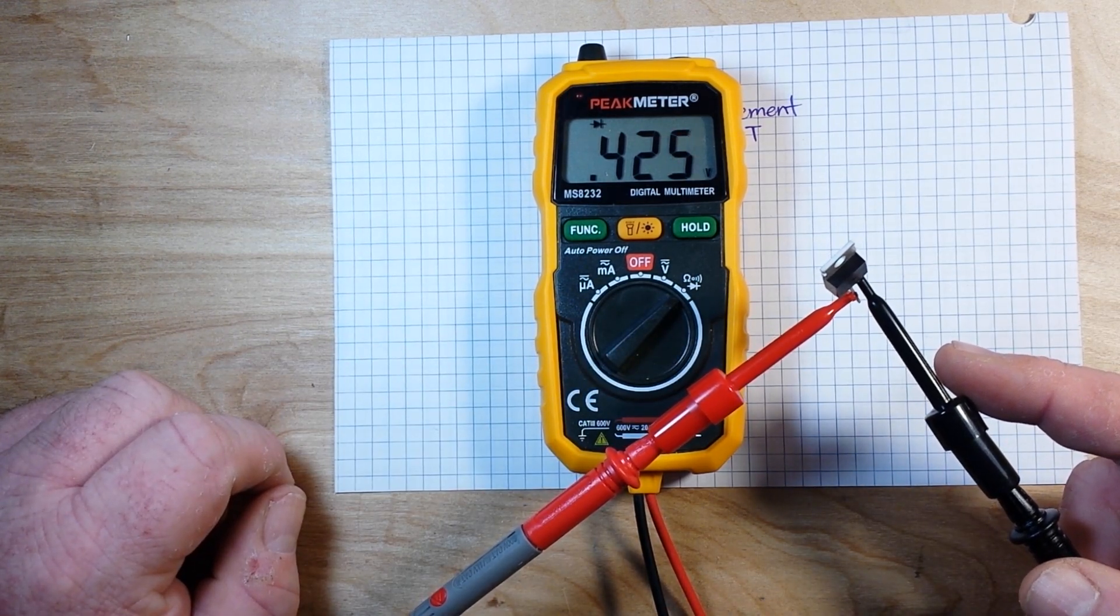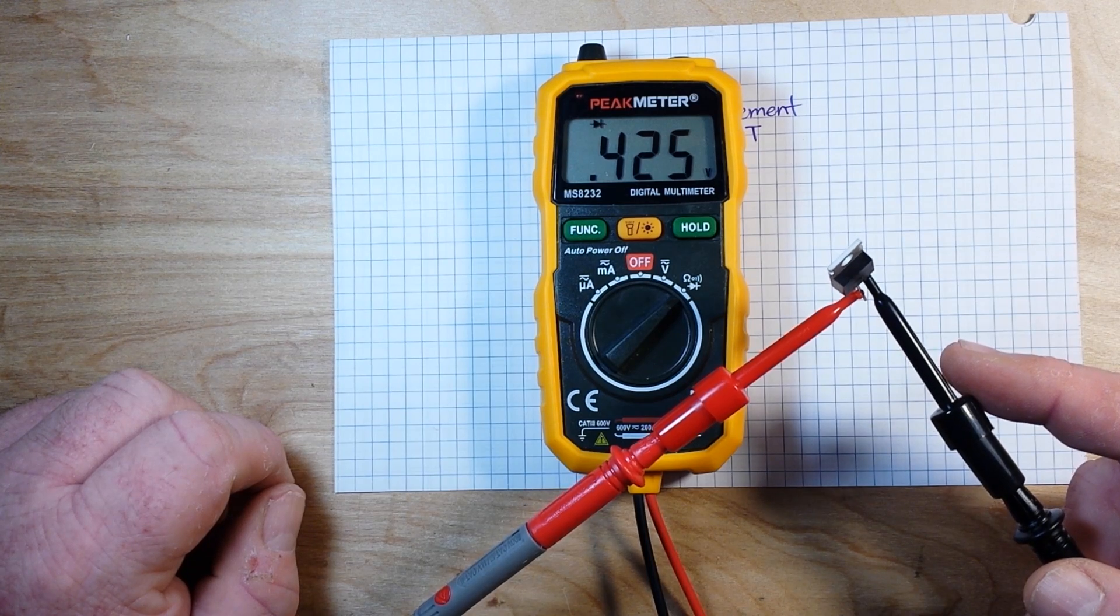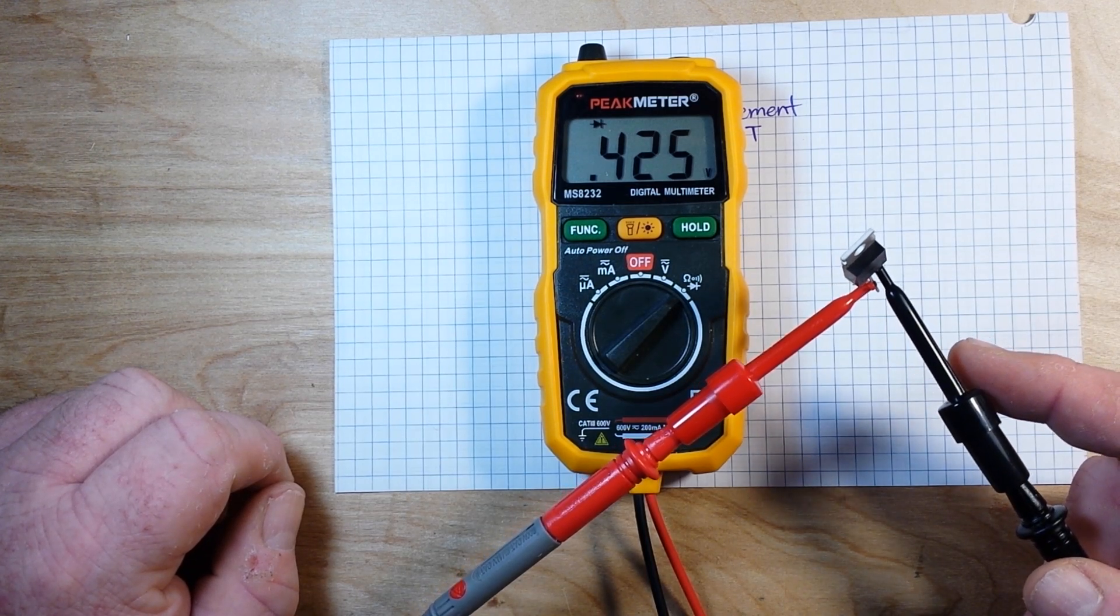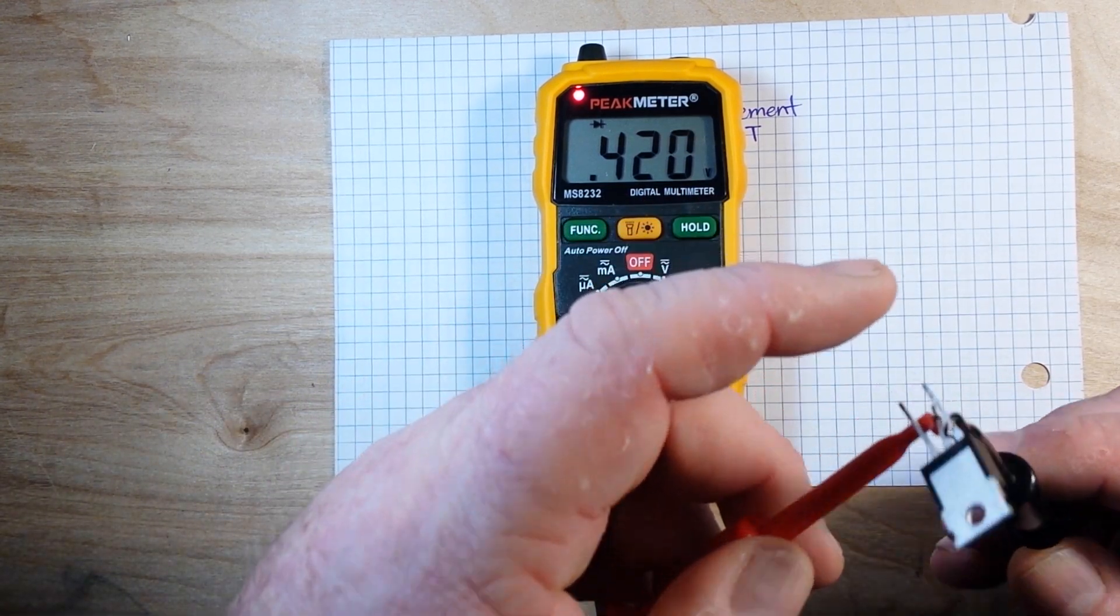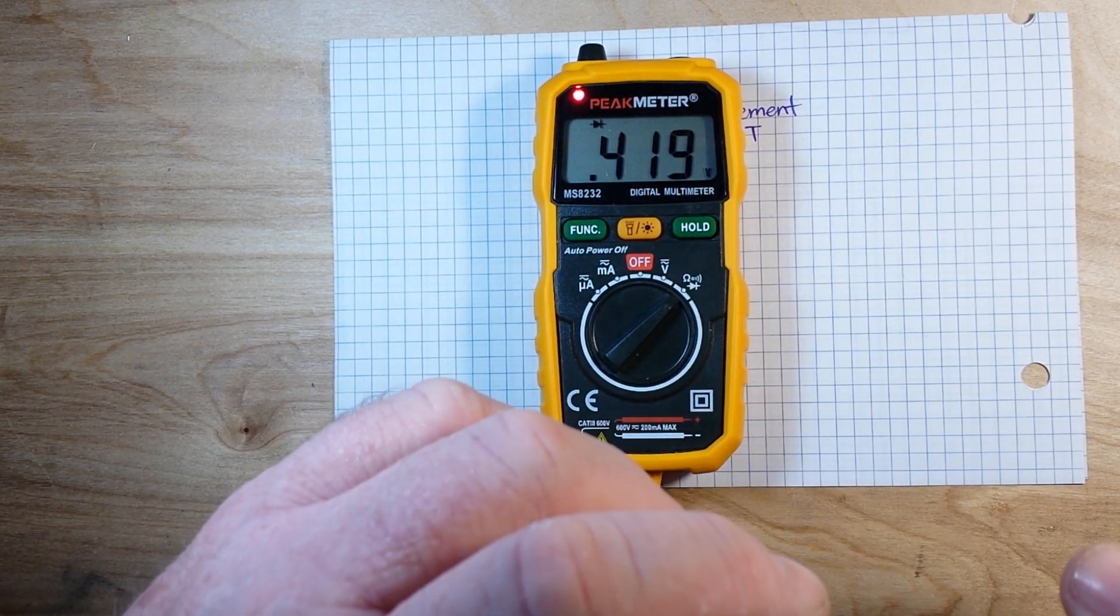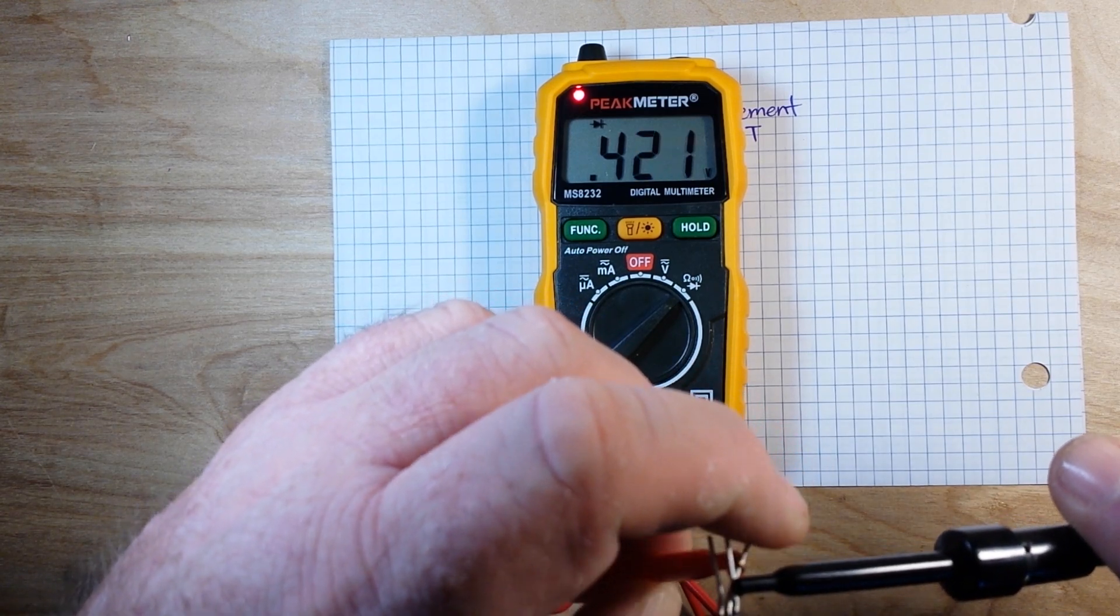And it will stay that way until you bring the gate voltage lower than the source. And to do that, all you got to do is take your finger and touch and short out gate to drain. Boom, just like that, we're back to zero.